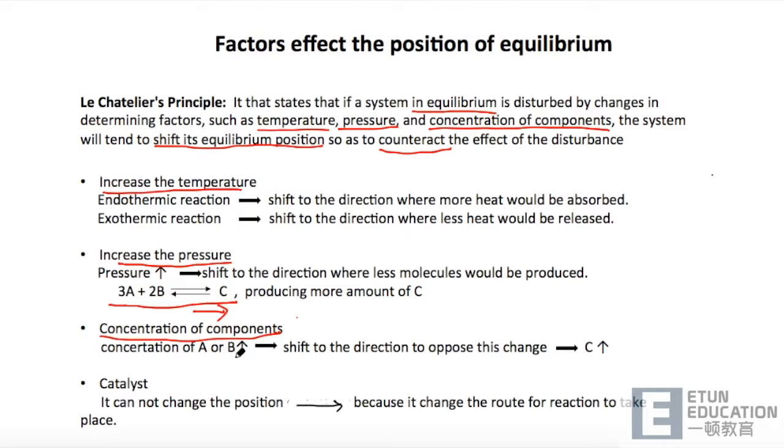当 concentration of A or B increase 的时候,这个 equilibrium position 就会 shift to the right direction. 为什么呢?因为我想这个 equilibrium position 它去减少这个 concentration of A and B 的方向移动,那这样子的话,A and B 就会消耗的更快,并且产生更多的 C,这样子使反应再次平衡。